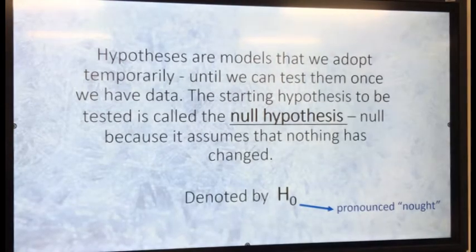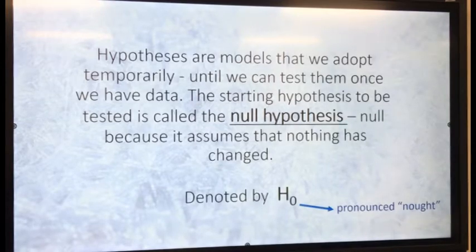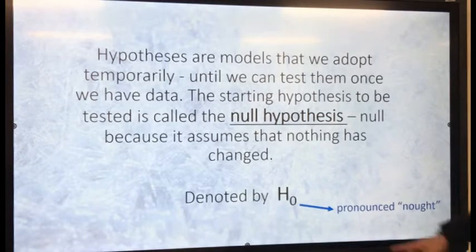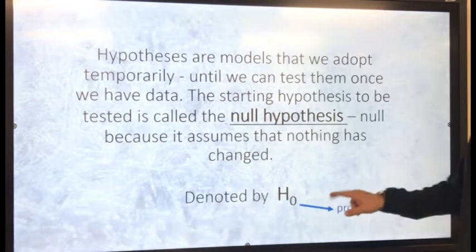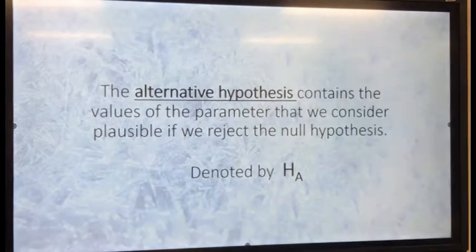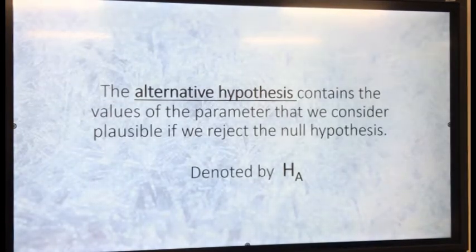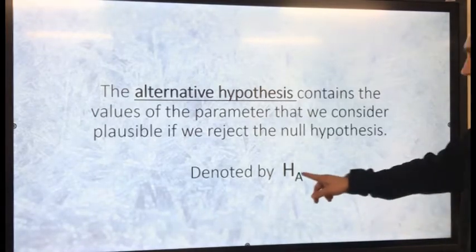Hypotheses are models that we adopt temporarily until we can test them once we have data. The starting hypothesis to be tested is called the null hypothesis — null because it assumes nothing has changed, and it's denoted by H-naught, also called H-null. The alternative hypothesis contains the values of the parameter that we consider plausible if we reject the null hypothesis, and it's denoted by H-A.